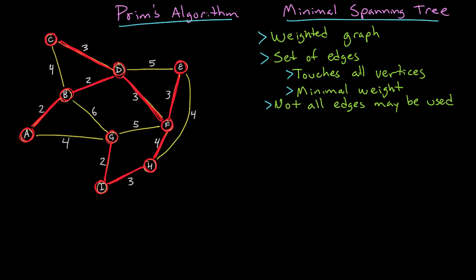Let's add up how much all of these came out to be. We've got the edge CD with a weight of 3, BD with a weight of 2, AB with a weight of 2, DF with 3, FE with a weight of 3 as well, GI with 2, IH with 3, and FH with 4. If we add all these up, we get 22 as the weight of our minimal spanning tree.